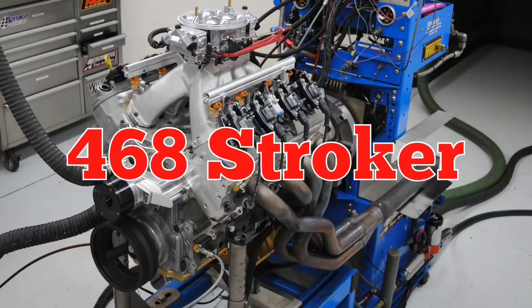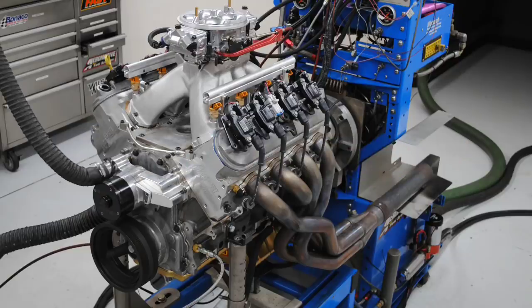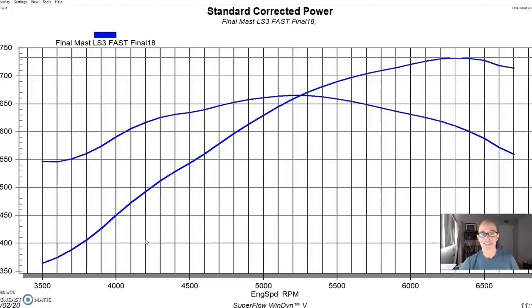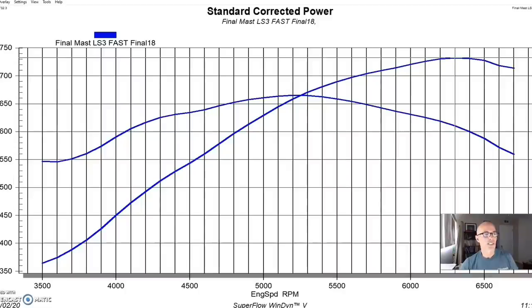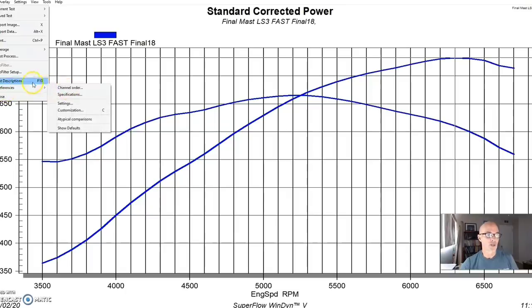Next comparison of the Fast LS3 style intake manifold compared to the Mast single-plane intake came on a much larger displacement. This was a 468-inch stroker motor with high compression. This was basically an LS6 block that we had sleeved. The guys from Darton sleeved this thing so we could increase both the bore and the stroke on this combination.